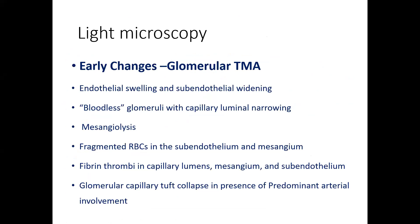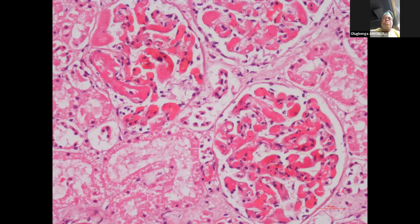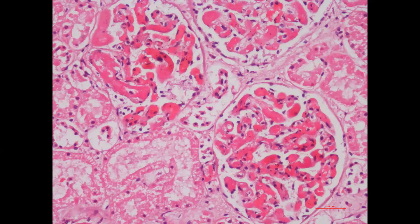The early changes of TMA include endothelial swelling (endotheliosis), bloodless glomeruli, mesangiolysis, fragmented red blood cells, fibrin thrombi, and glomerular capillary tuft collapse. On H&E, we can see dilated and distended capillary lumens occluded by homogeneous eosinophilic material — fibrin thrombi — present both in glomerular capillary lumens and the arterial wall. On Masson trichrome stain, fresh fibrin is orange/fuchsinophilic; old fibrin appears blue. Fibrin thrombi can be confirmed using MSV stain.